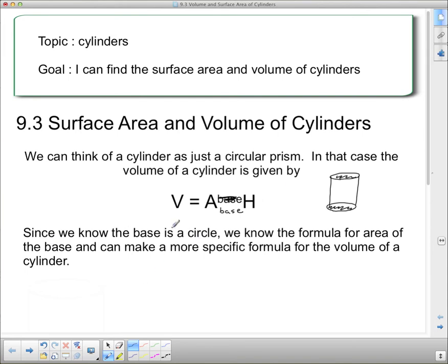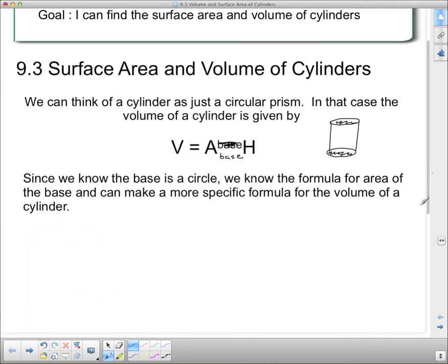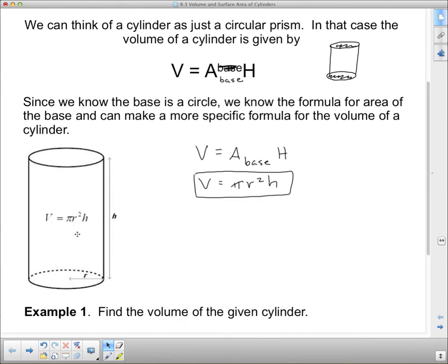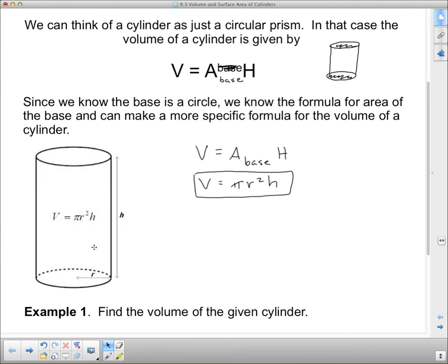So we have volume equals area of the base times the height. Now since we know the area of the base is a circle, we can make a more specific formula. Volume equals area of the base times the height. But the area of the base is a circle, and I know that to find the area of a circle, I need π r². So usually we don't use a capital H, we just use a little h. So this is the formula you're going to see most often. Volume equals π r² times the height of the cylinder. Volume equals π r² h, where r is the radius of the cylinder and h is the height of the cylinder.